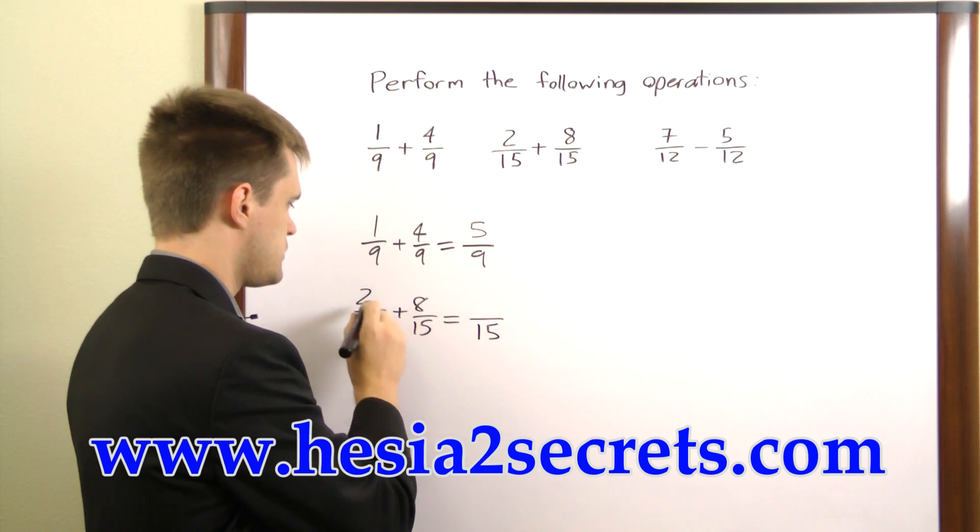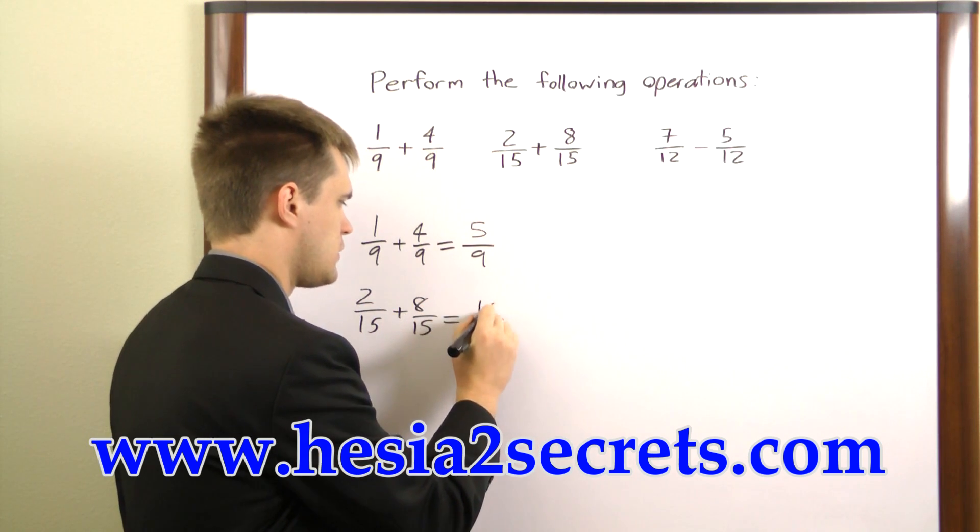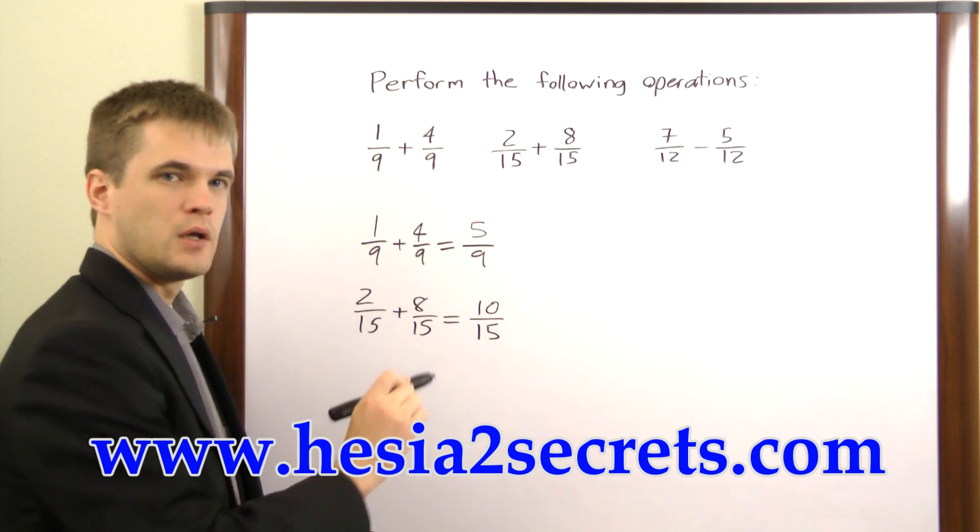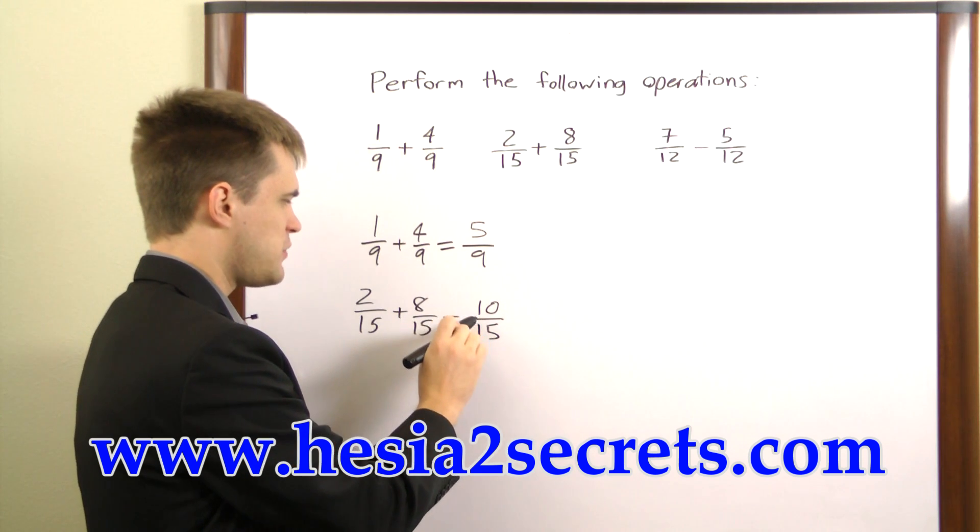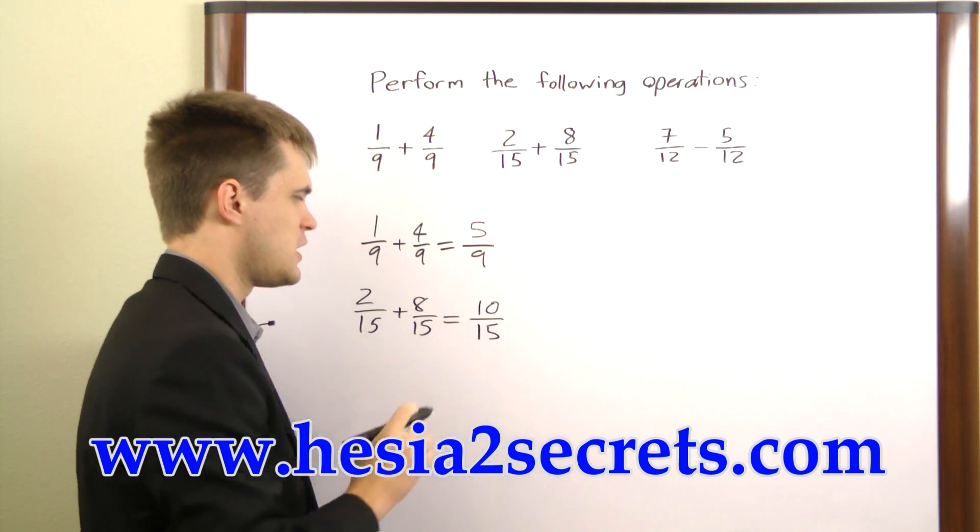Then we just add the two numerators, 2 plus 8 equals 10. Now with this fraction we can actually simplify it by reducing the numerator and the denominator.